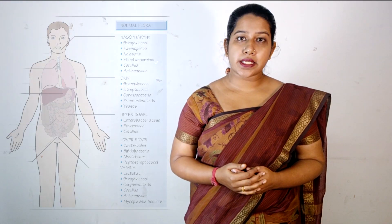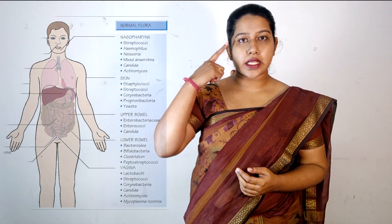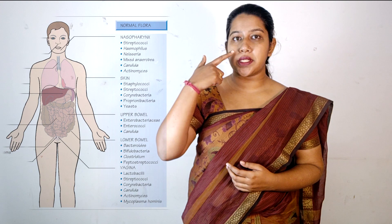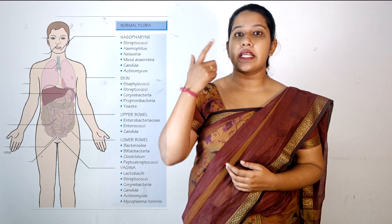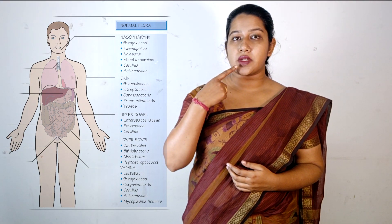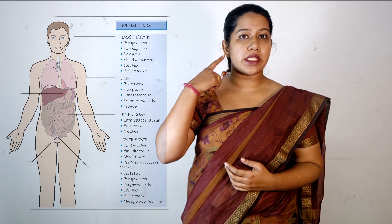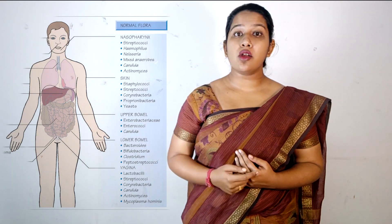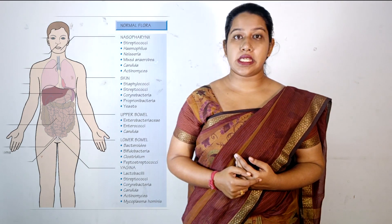The places where normal microbial flora is generally present are: the conjunctiva, the respiratory tract, the gastrointestinal tract, the external auditory meatus, all over the skin, and the genital tract.